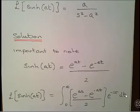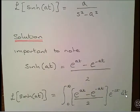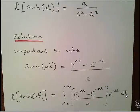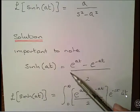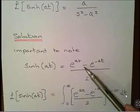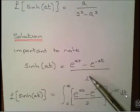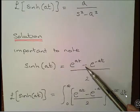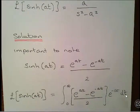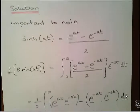The important thing to remember is the definitions of hyperbolic sine and hyperbolic cosine. A lot of what we're doing here can also apply to hyperbolic cosine, cosh, if you're careful with signs. Hyperbolic sine of at is equal to e to the at minus e to the minus at, all over 2. For cosh, just change that minus to a plus.